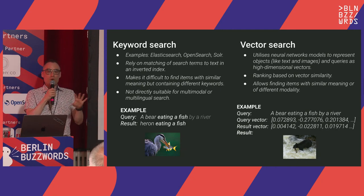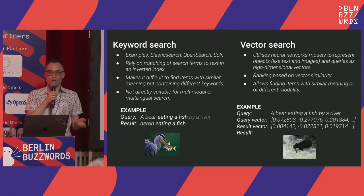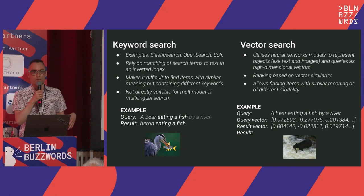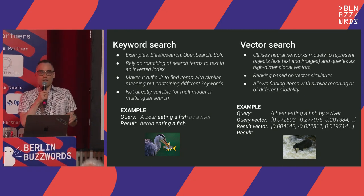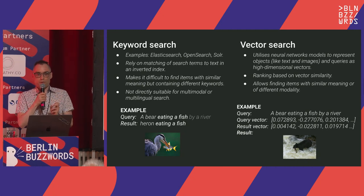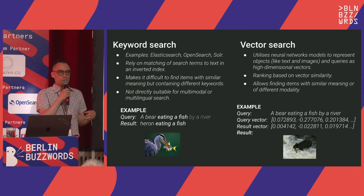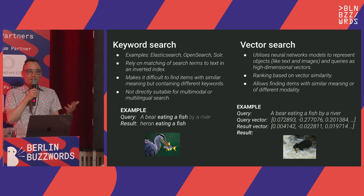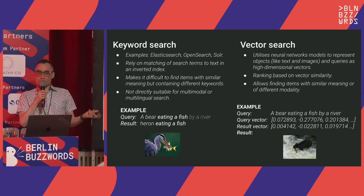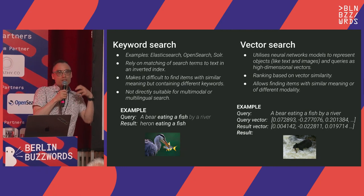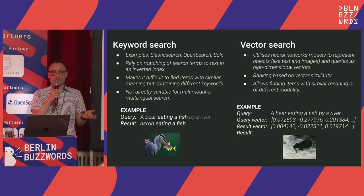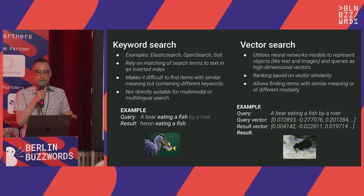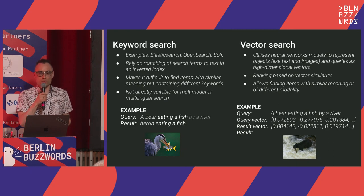In a nutshell, how does keyword search compare to vector search? Keyword search systems — like Elasticsearch, OpenSearch, Solr, Vespa — rely on matching terms using an inverted index, a data structure from the 15th century found at the back of every book. It makes it quite difficult to find items with similar meaning, and it's not directly suitable for multimodal search. You can't really index an image because it doesn't have terms. For example, if I type 'a bear eating a fish by a river,' untuned keyword retrieval using Elasticsearch would fetch 'heron eating a fish' — it catches 'eating a fish' but forgets about the object.